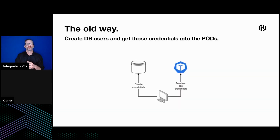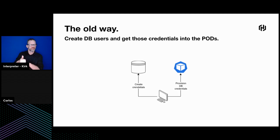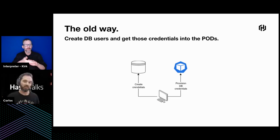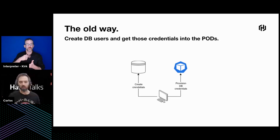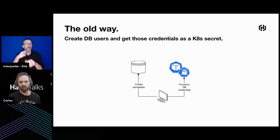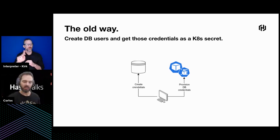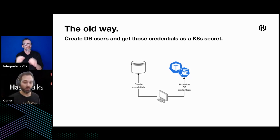How things started for me: we used to have a database that someone on the systems team provisioned, running applications where someone created credentials and gave them to us. We put them into a file and made that available for the application. That's not secure, so we added a Kubernetes secret — which is encoded, not really encrypted, but a slightly more secure way of provisioning values to our application. Still not very good.